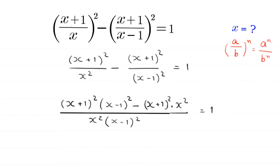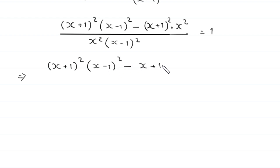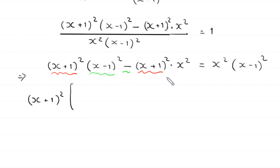So (x + 1)² times (x - 1)² minus (x + 1)² times x² is equal to 1, after multiplying both sides by the denominator x² times (x - 1)². The right-hand side becomes x² times (x - 1)². From the left-hand side we can factor out (x + 1)², leaving (x + 1)² as a common factor with [(x - 1)² - x²] in the bracket.